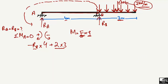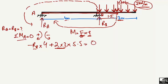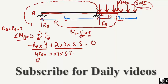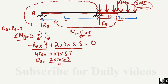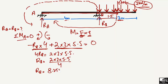This 6 kN concentrated load will act at the center of the distributed portion and creates a moment about point A in the clockwise direction, so it is positive. The moment arm is the distance from the midpoint of the UDL to point A: 4 plus 3/2 = 4 + 1.5 = 5.5 meters. Setting the summation of moments about A equal to zero, we get 4 R_B = 2 × 3 × 5.5. Solving this gives R_B = 8.25 kN.